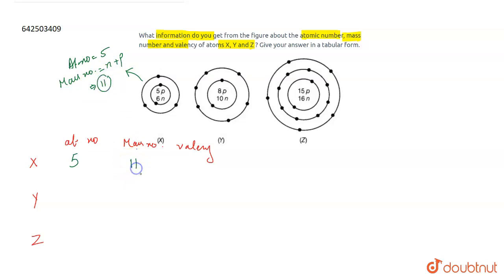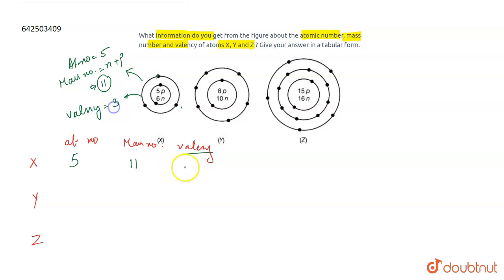Talking about the valency of X: it has three electrons in its valence shell, which means it can easily lose these three electrons. Therefore, the valency of X is equal to three.